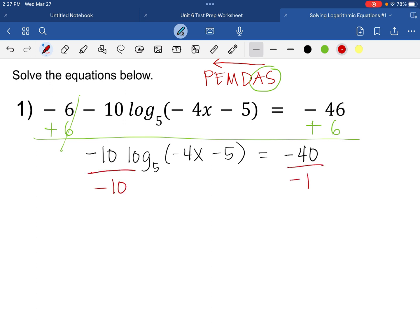And we can do that by dividing negative 10 on both sides. Inverse of multiplication is division. So that would leave us with log of negative 4x minus 5 with base 5 equals 4.